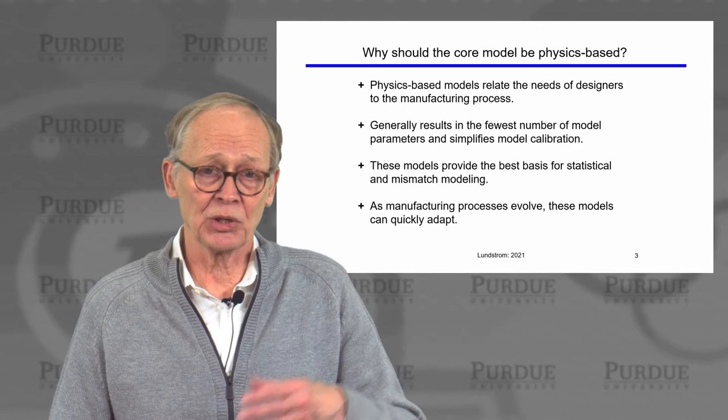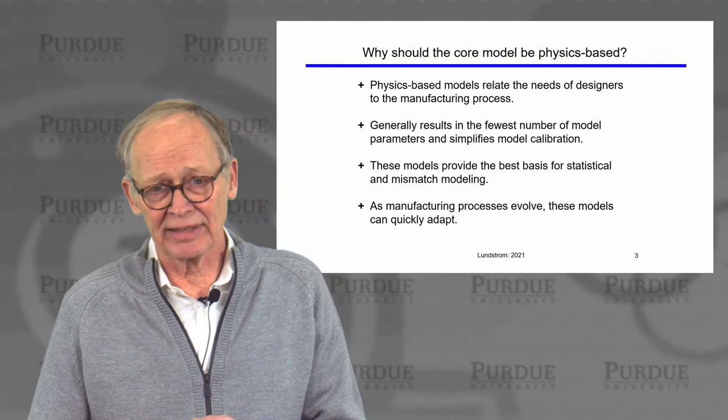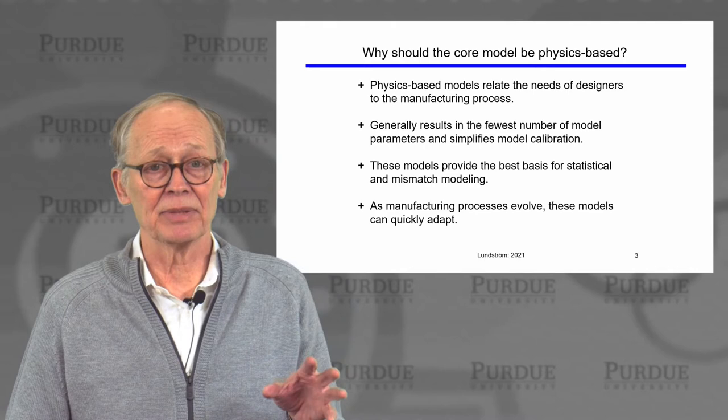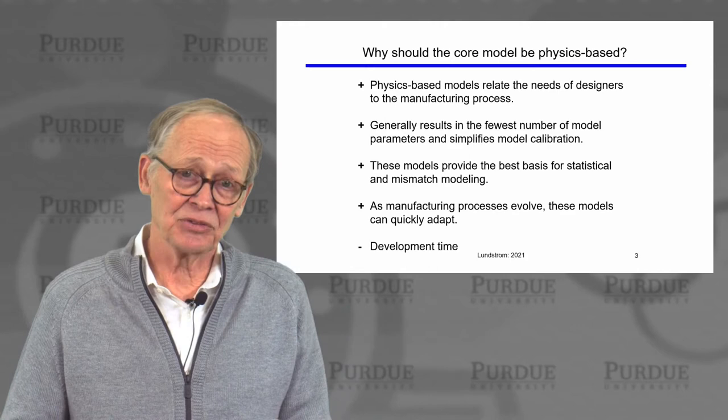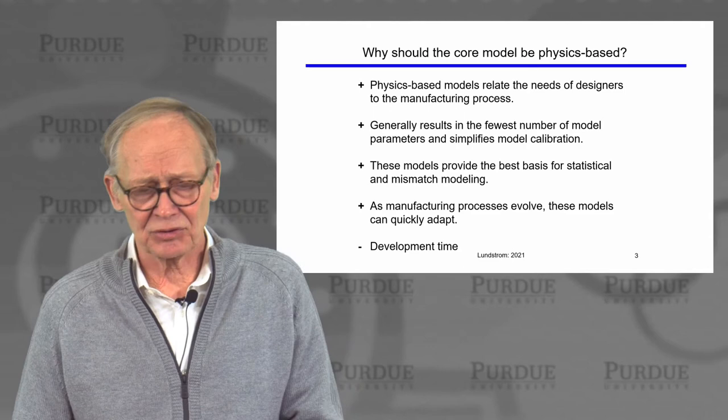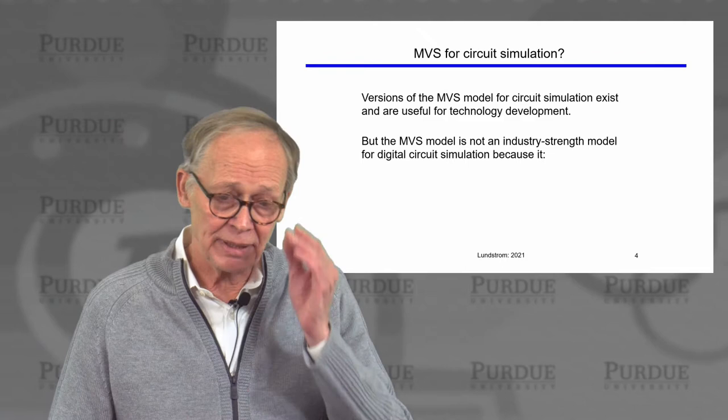Manufacturing processes evolve over time — we go from one generation to another, and even within a generation the process will evolve. As the channel length, oxide thickness, or other parameters change, the compact model can be quickly and easily updated for the change in the manufacturing process. A downside is that these kinds of models generally take longer to develop, but they have so many benefits that they are the preferred type of models today.